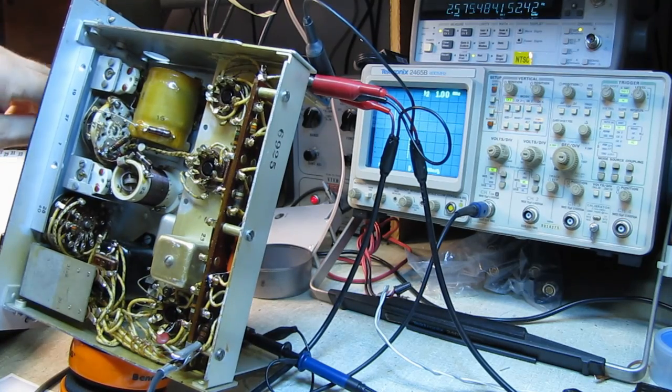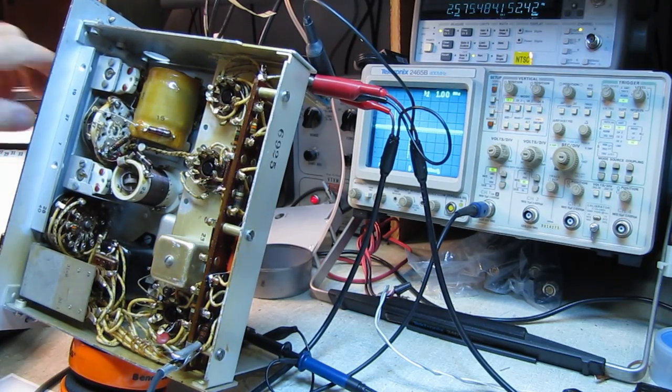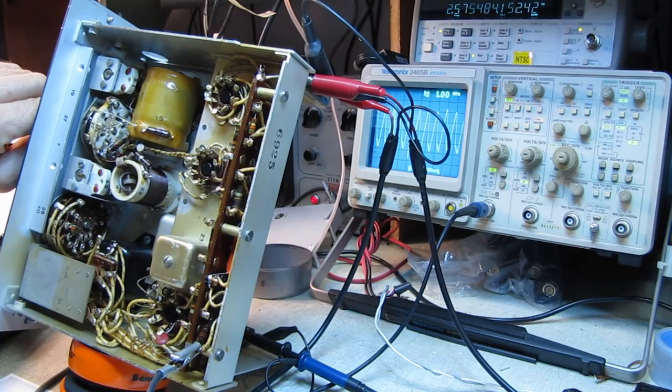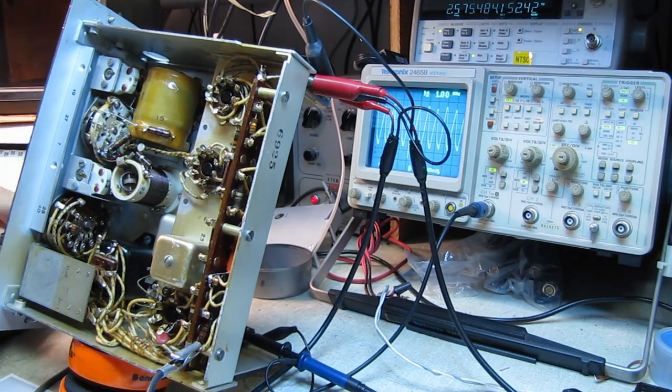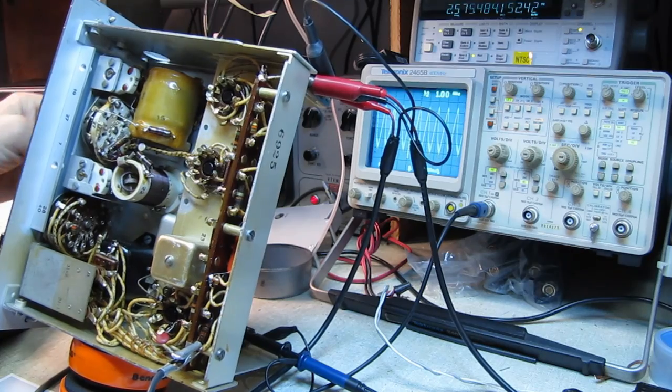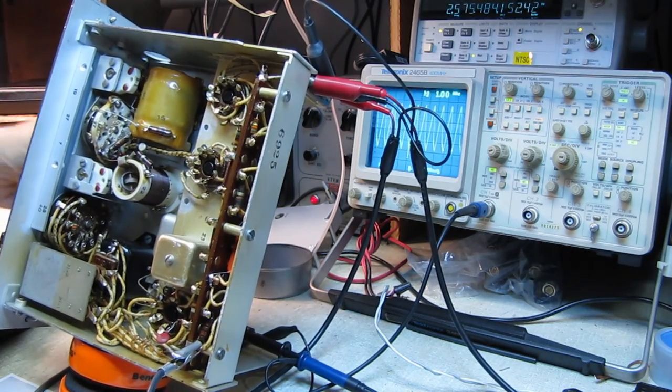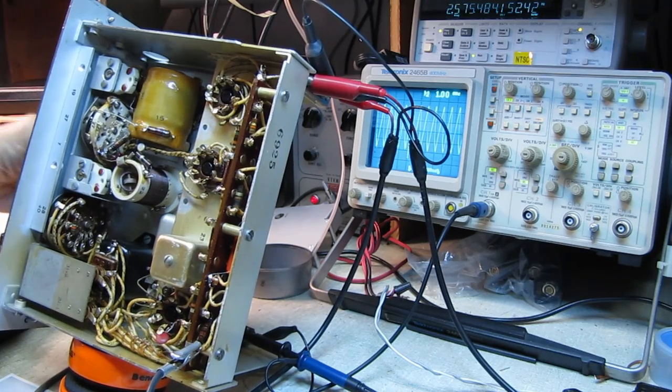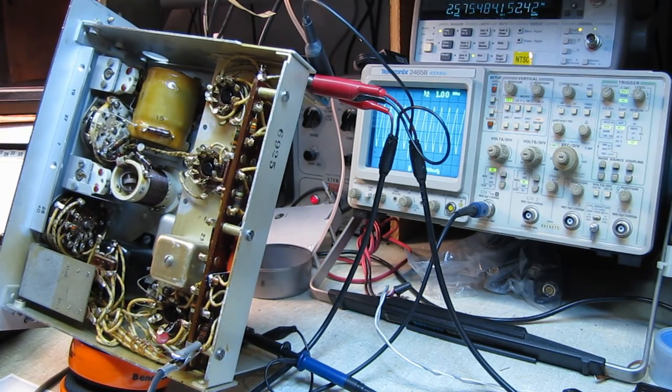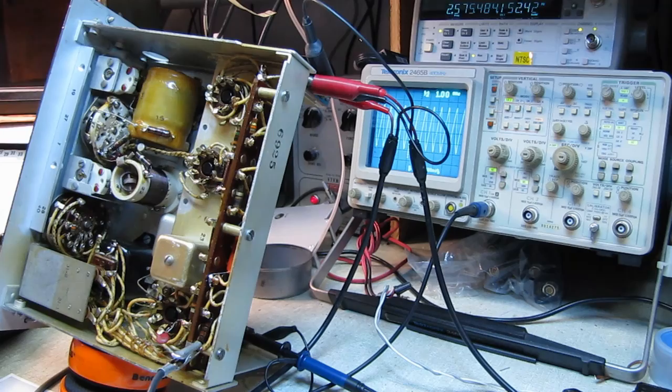But I still don't have any low frequency oscillator. All I have is the high frequency one. What you're seeing there is bleed through from the crystal oscillator. But I should have a local oscillator. And if I turn the volume down here, you can see the frequency changing.